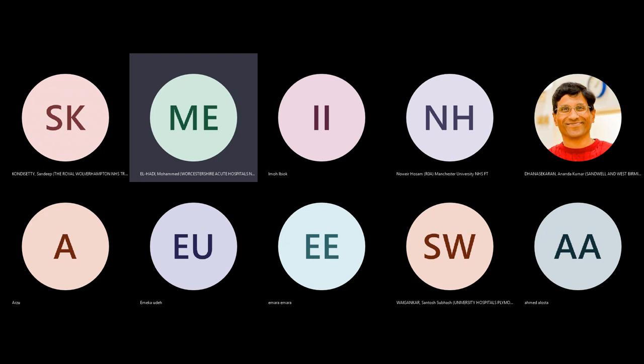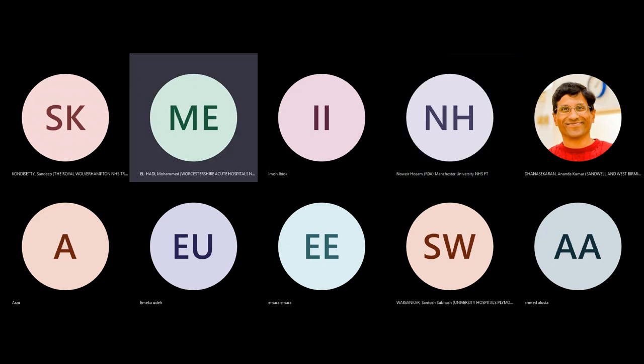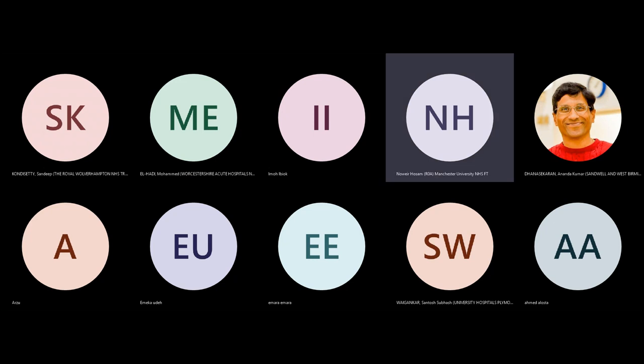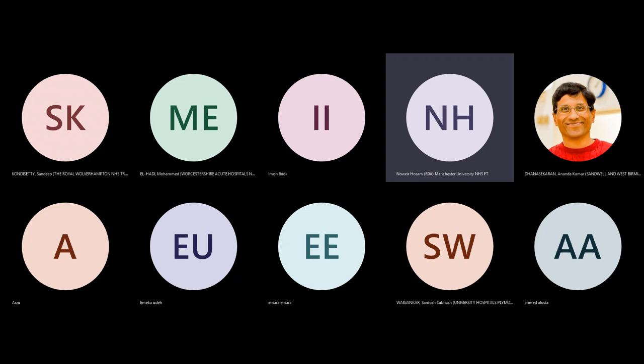You work in a tertiary center and you have different laser machines in theater. The scrub nurse asks which laser machine you want to use. I would use the MOSES. The MOSES uses a double bubble effect — the first bubble separates the water, and the other bubble works via the normal photothermal and photomechanical effect.